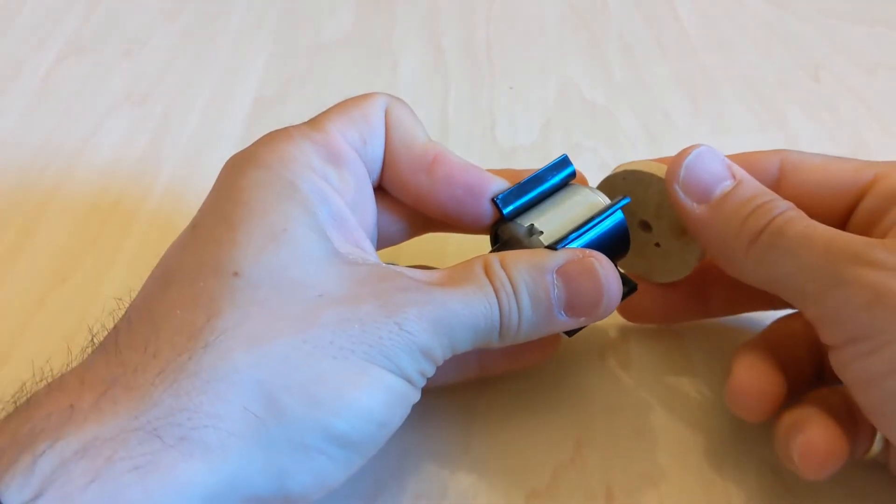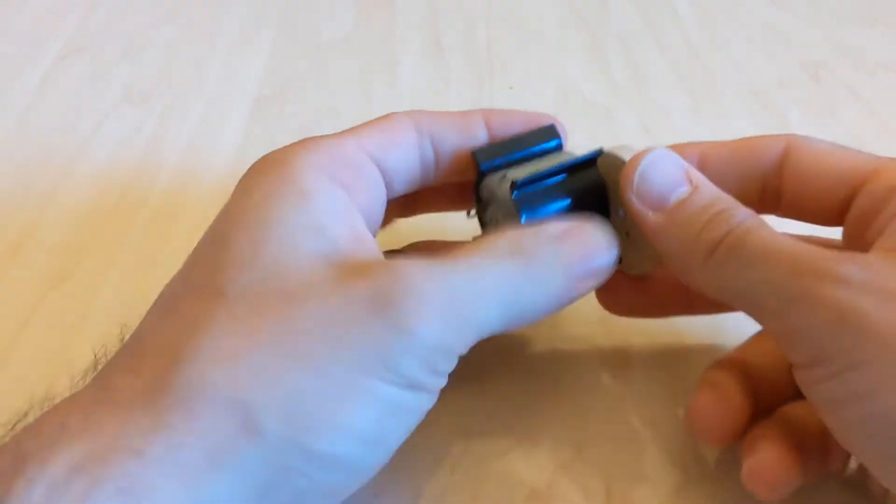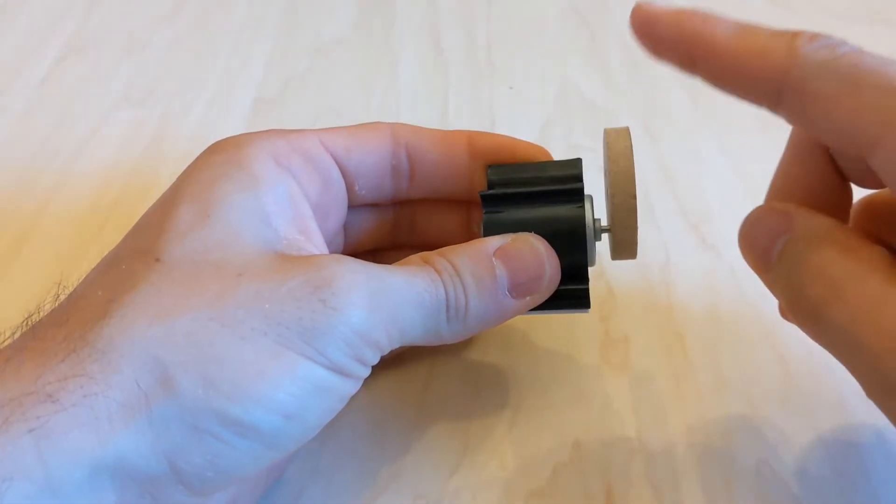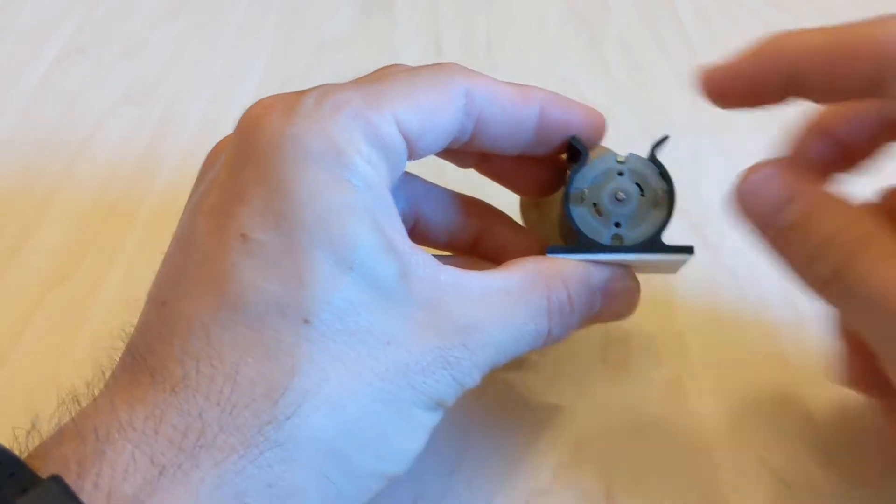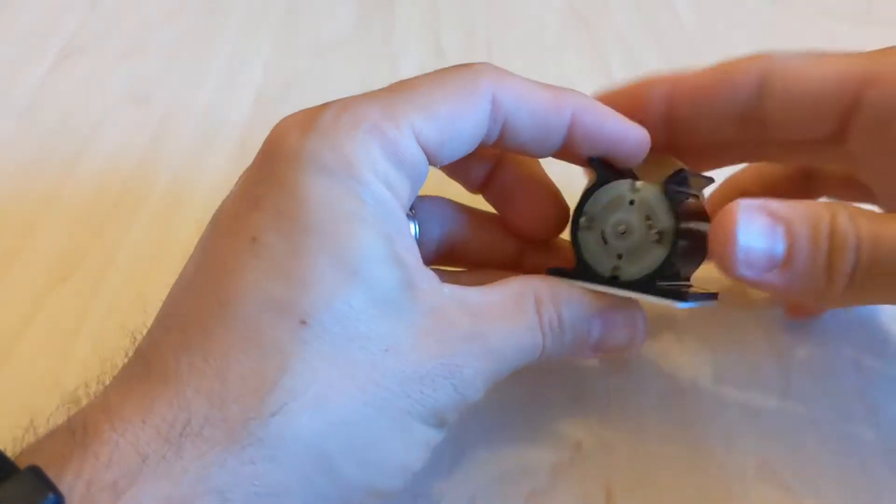Next, attach the counterweight, that's the wheel with the small hole drilled into it, and push it onto the motor spindle. Make sure it can freely spin and the two motor terminals are to the sides.